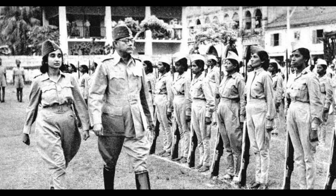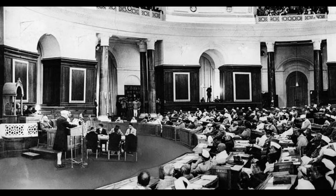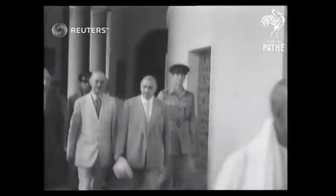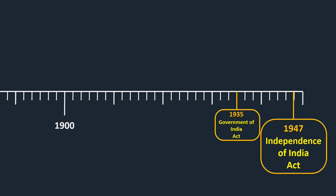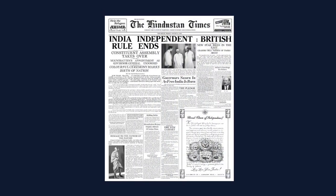The pressure was mounting on the British government to negotiate with Indian leadership. For that purpose, the Cabinet Mission reached India, and on its recommendation the Constituent Assembly of India was formed. Clement Attlee, the British PM, announced his intention to transfer powers to Indians by June 1948. But according to the Mountbatten Plan, India could be freed in August 1947, and for that purpose the last act was passed — the Indian Independence Act — which gave freedom to India and Pakistan.